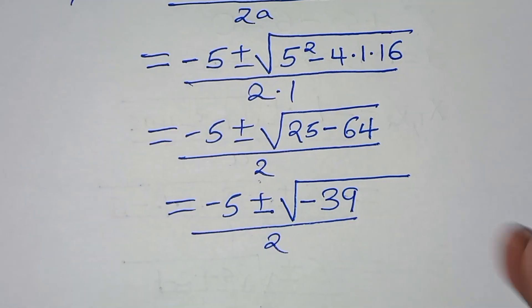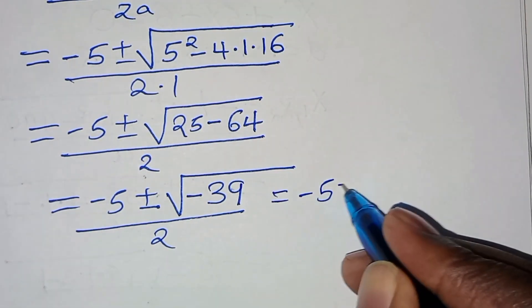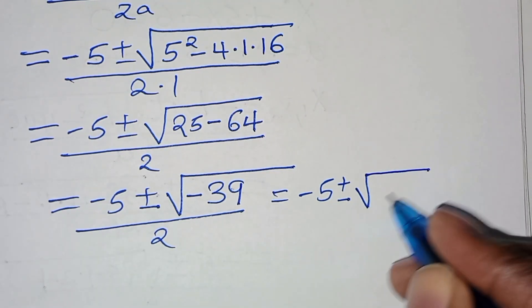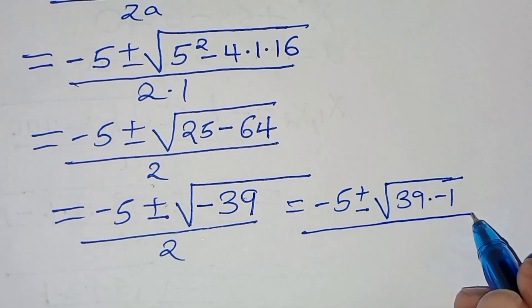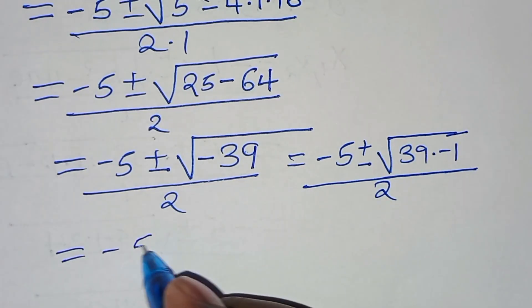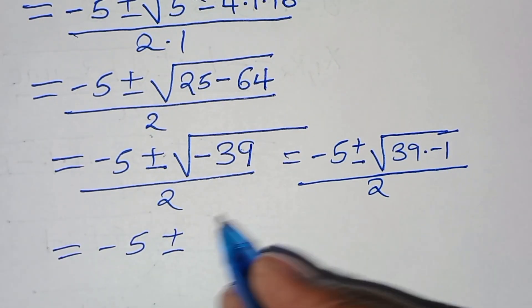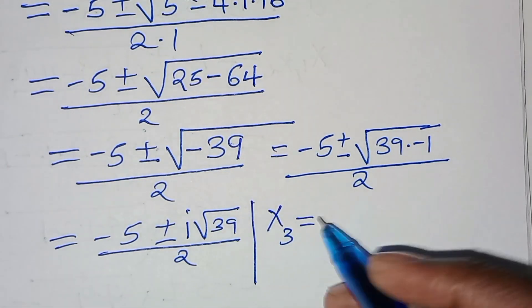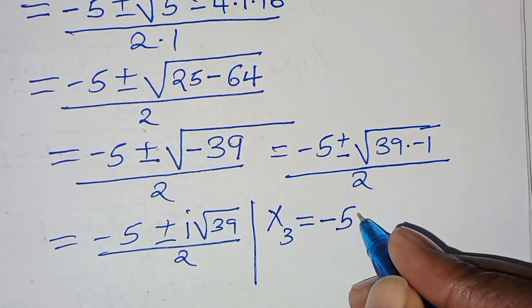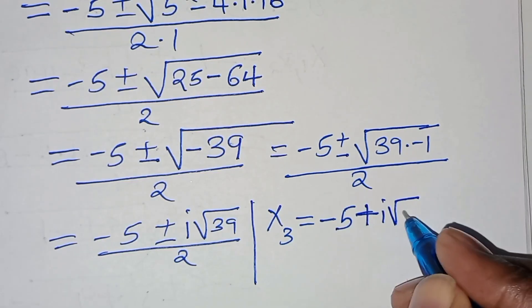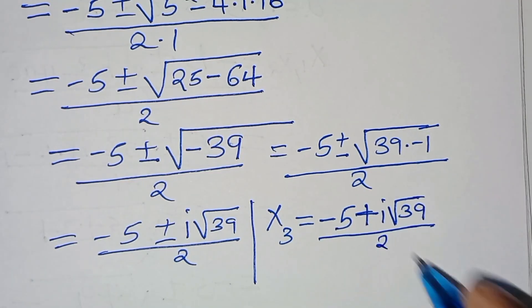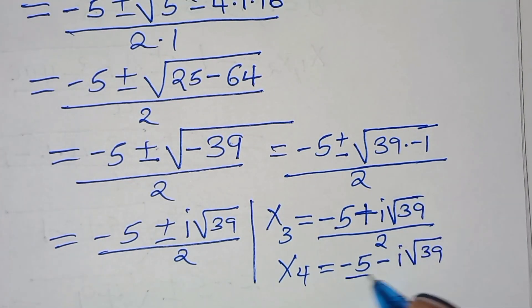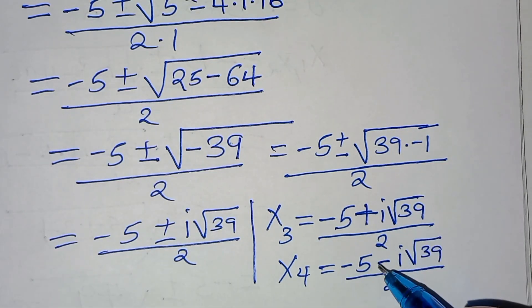Since we have √(-39) = i√39, the two complex solutions are x₃ = (-5 + i√39)/2 and x₄ = (-5 - i√39)/2.